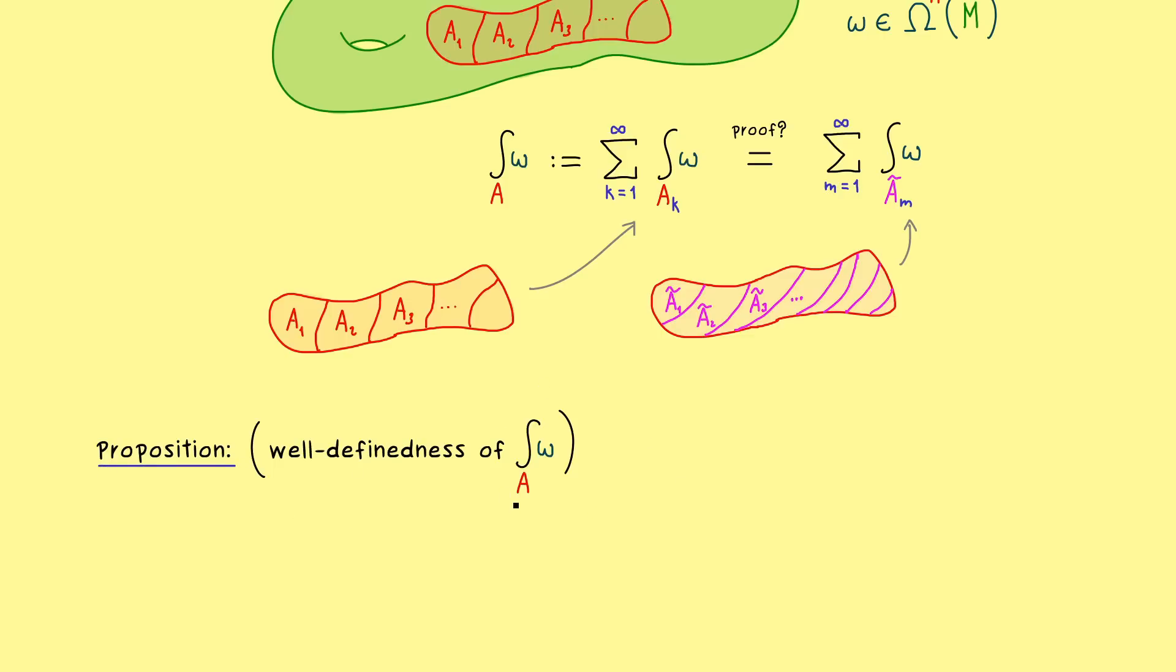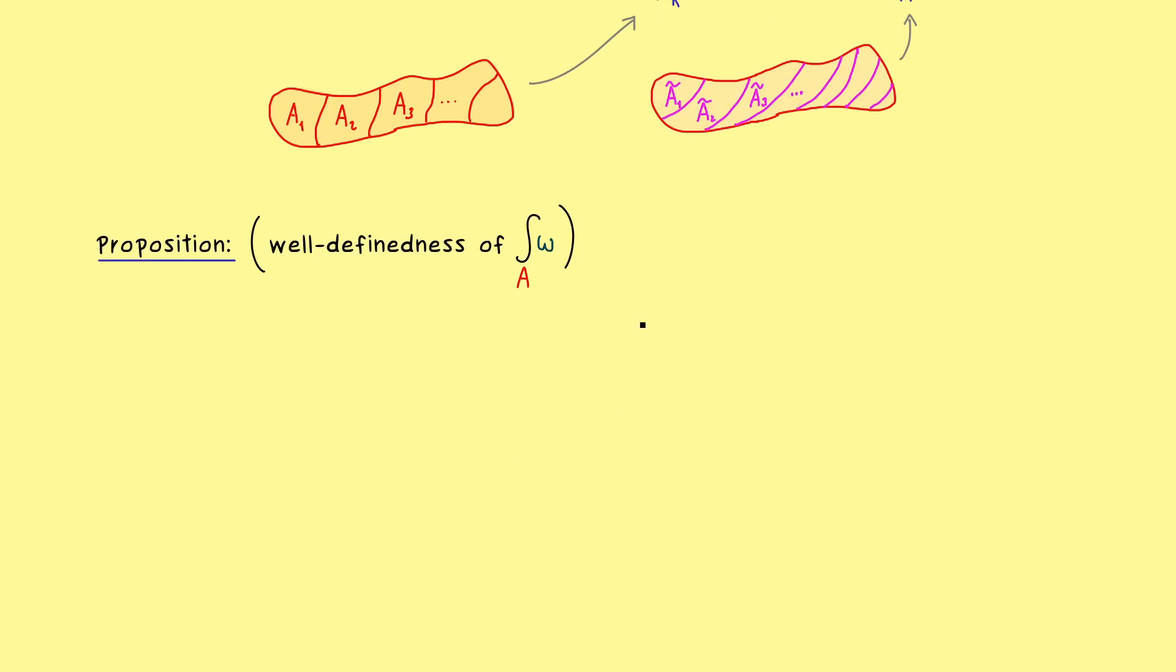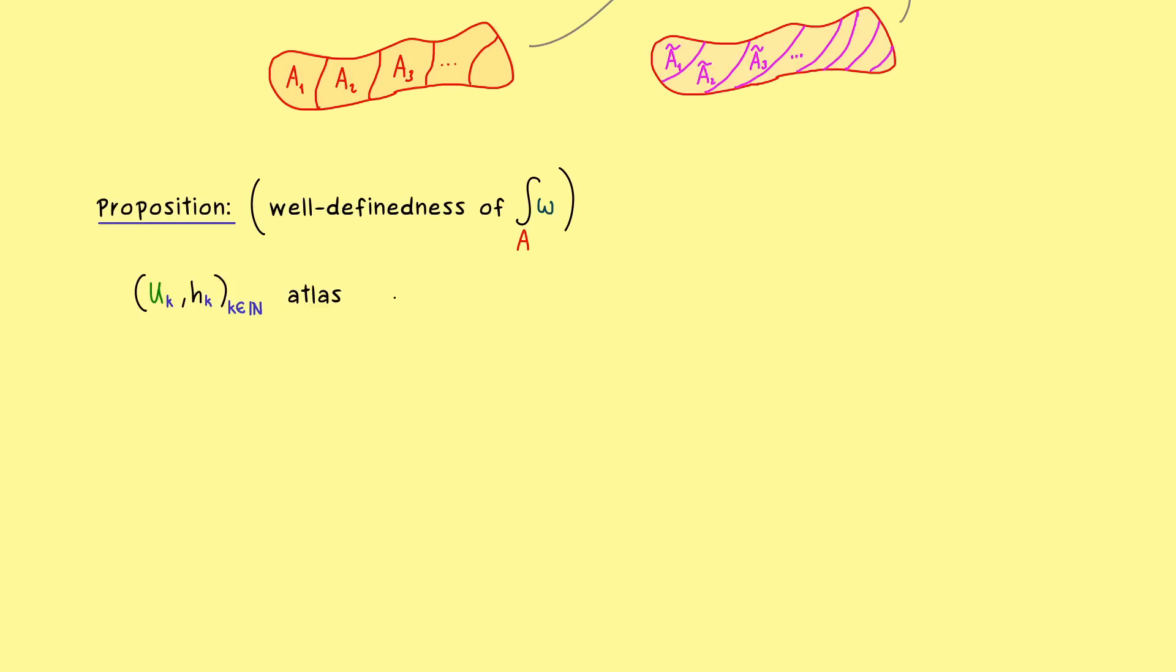In other words, this is the proposition that tells us that the integral is well defined. So first we have to state all the ingredients we need for the integral definition. And since we have discussed that in the last video with all details, I would say we can keep it simple here. So first we have a countable atlas Uk, Hk of the manifold M. And with respect to this one, we can write A as a disjoint union.